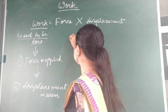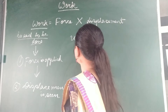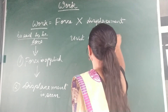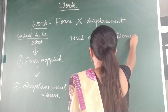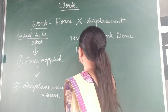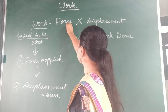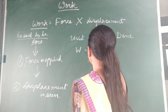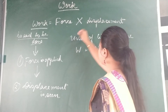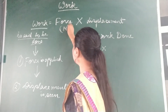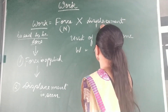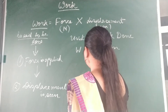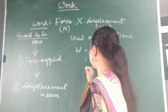So let us see the unit of work done. W is equal to force, to be calculated in Newton, into displacement, to be calculated in meter. So it will be Newton meter, and Newton meter has a special name as Joule.